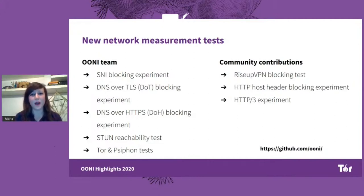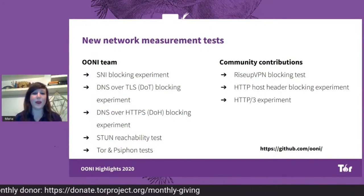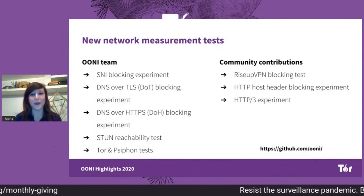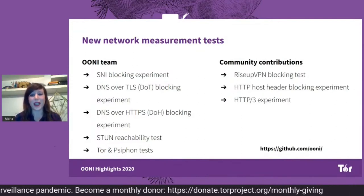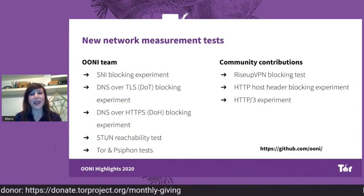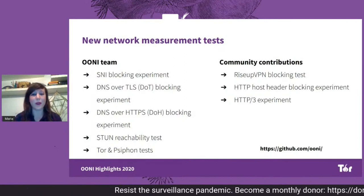The types of tests that we decided to prioritize were informed by emergent censorship events we came across around the world. Over the last years, we've frequently been seeing SNI-based blocking in many countries, and that is why we decided to prioritize the development of a new SNI-blocking experiment. Similarly, we developed an experiment for DNS over TLS because we saw it blocked in places like Iran. The fact that our measurement engine is in Go also makes it easier for community members to contribute their own tests, such as a new test for measuring RiseUp VPN blocking.